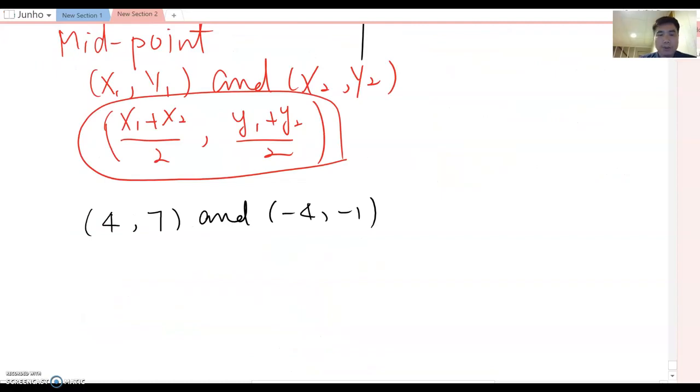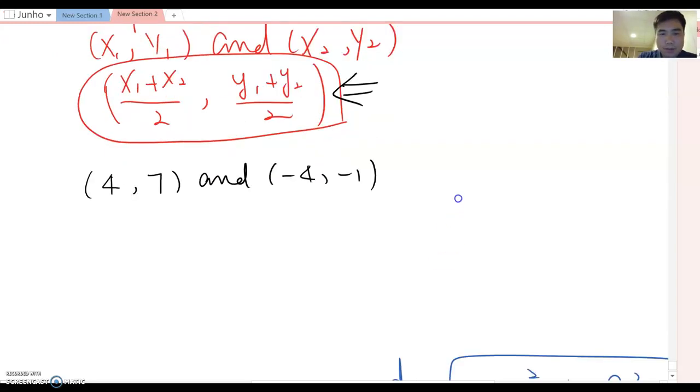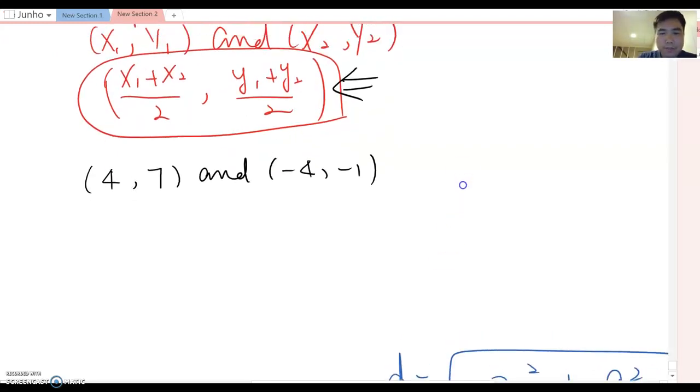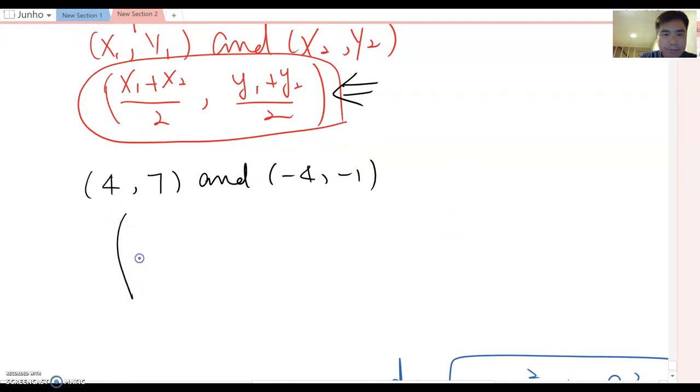Let's do one more question. Given point 4 comma 7 and negative 4 comma negative 1, now we want to try to find the midpoint of these two points here. So now we know this formula already, so I will totally apply this formula this time.